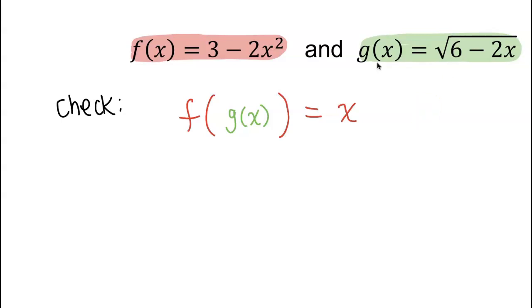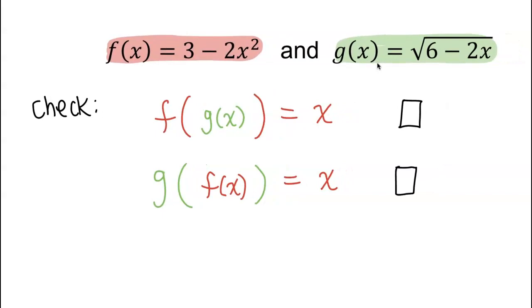The second condition that we must check is if g of f of x comes out to be x. If we can check off these two boxes, then we get to say yes, they are inverses of each other.